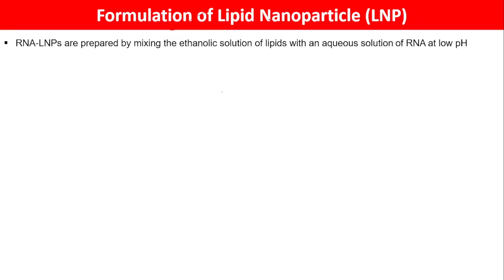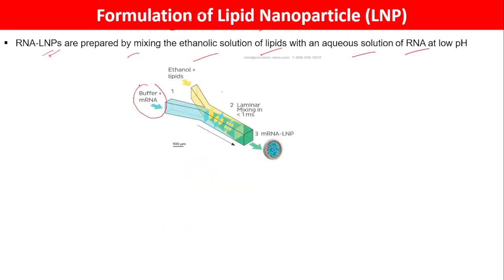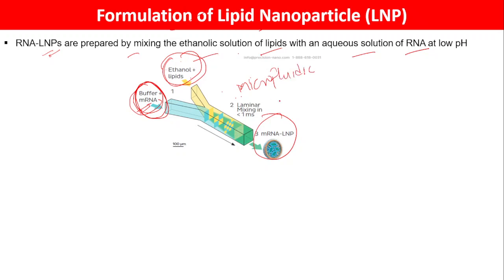How do we formulate lipid nanoparticles? Lipid nanoparticles are prepared by mixing an ethanolic solution of lipids with an aqueous solution of RNA at low pH. We have an acetate or citrate buffer plus mRNA as the aqueous solution, and an ethanolic solution of different lipids — ionizable lipids, helper lipids, cholesterol, and PEG. We call these solution A and solution B, and we mix these two solutions with the help of laminar mixing or microfluidic mixing using a lipid nanoparticle making device. This results in the formation of mRNA-LNP.